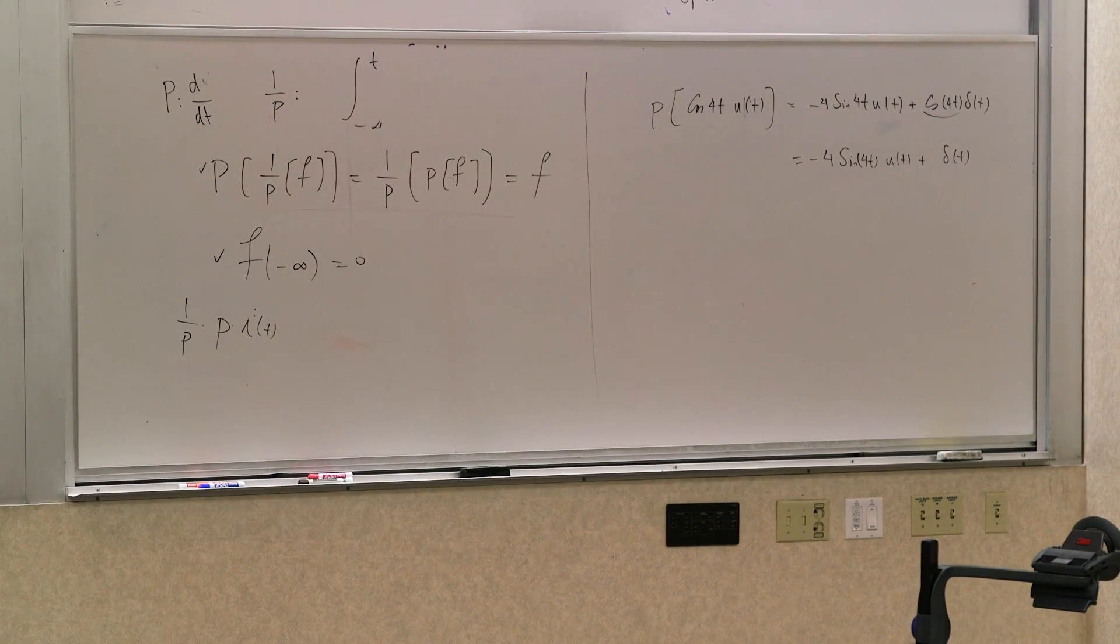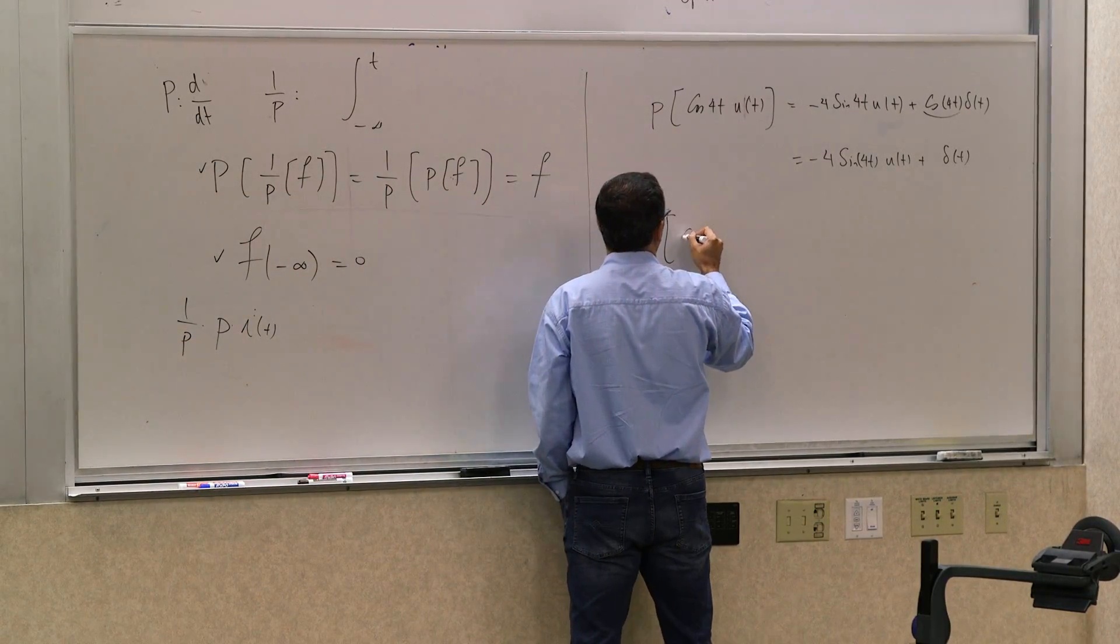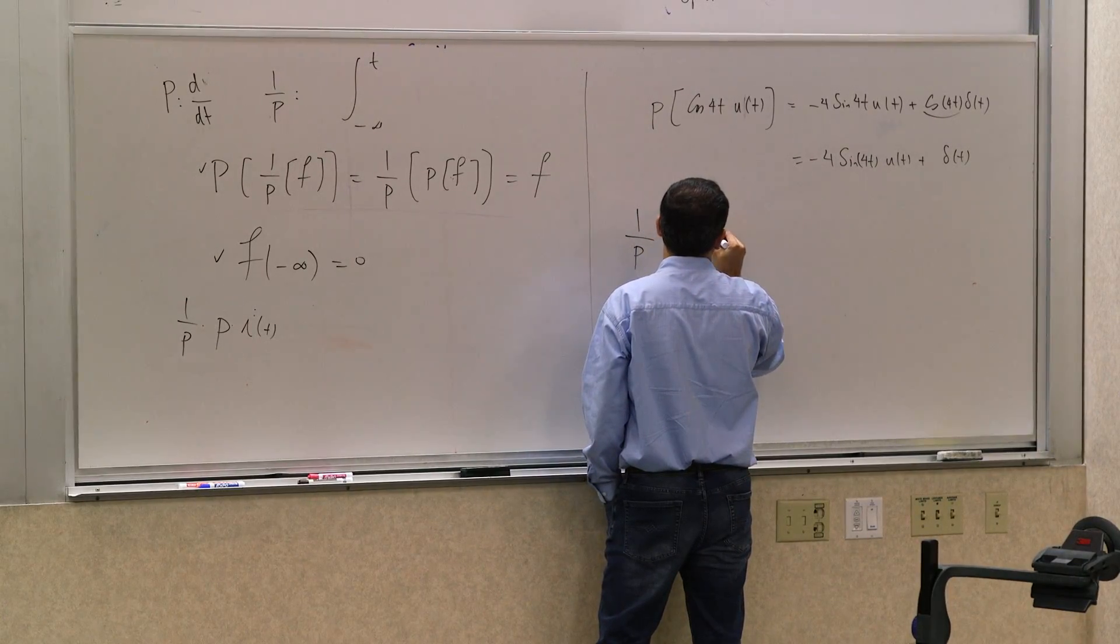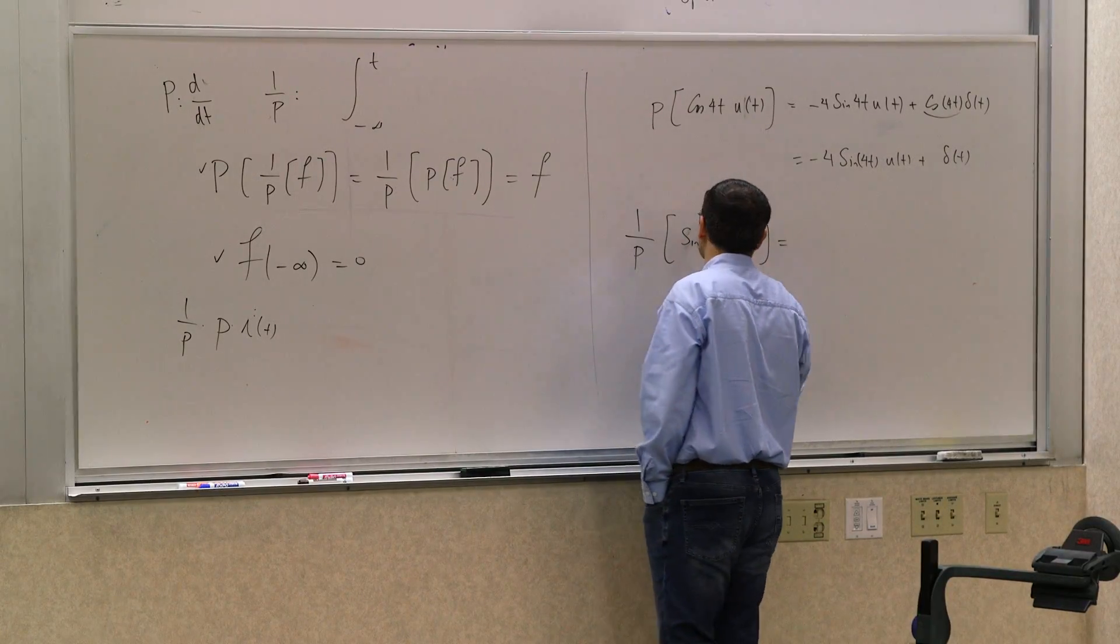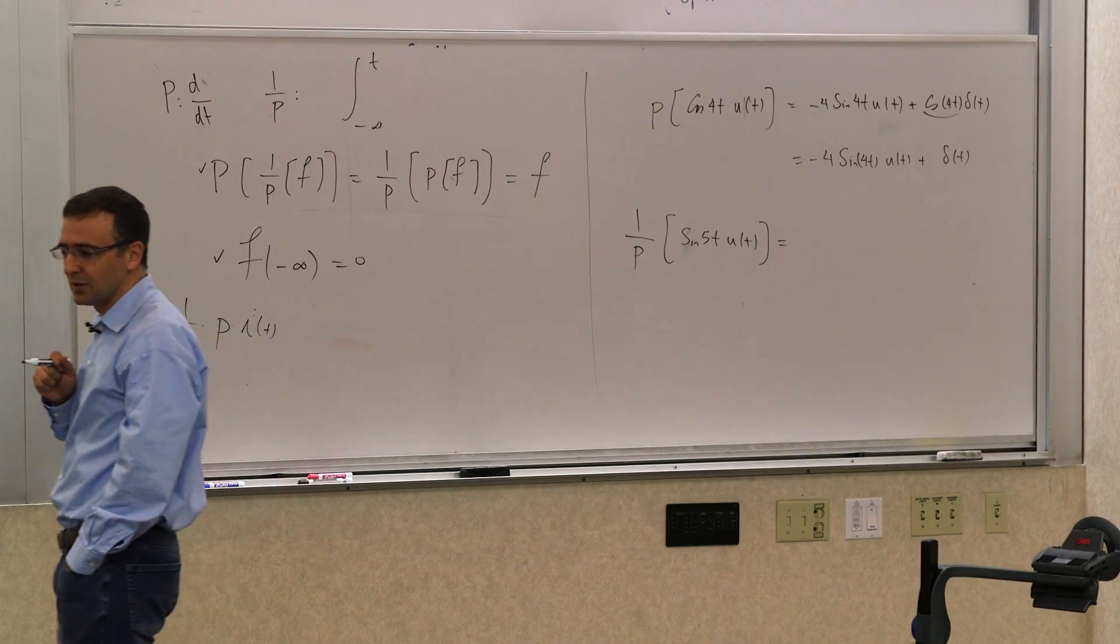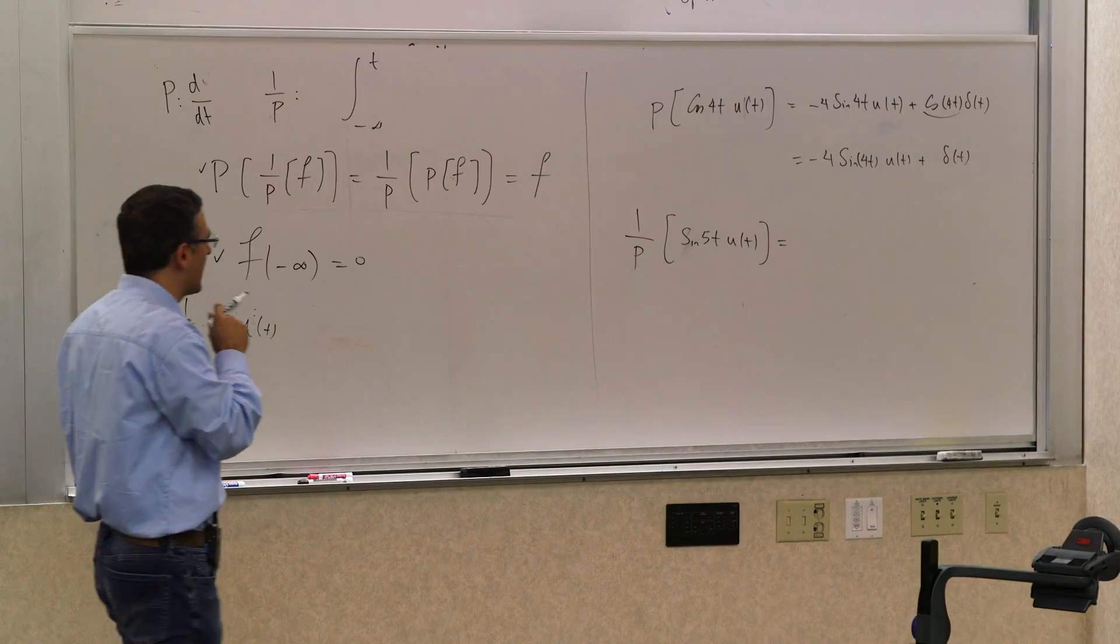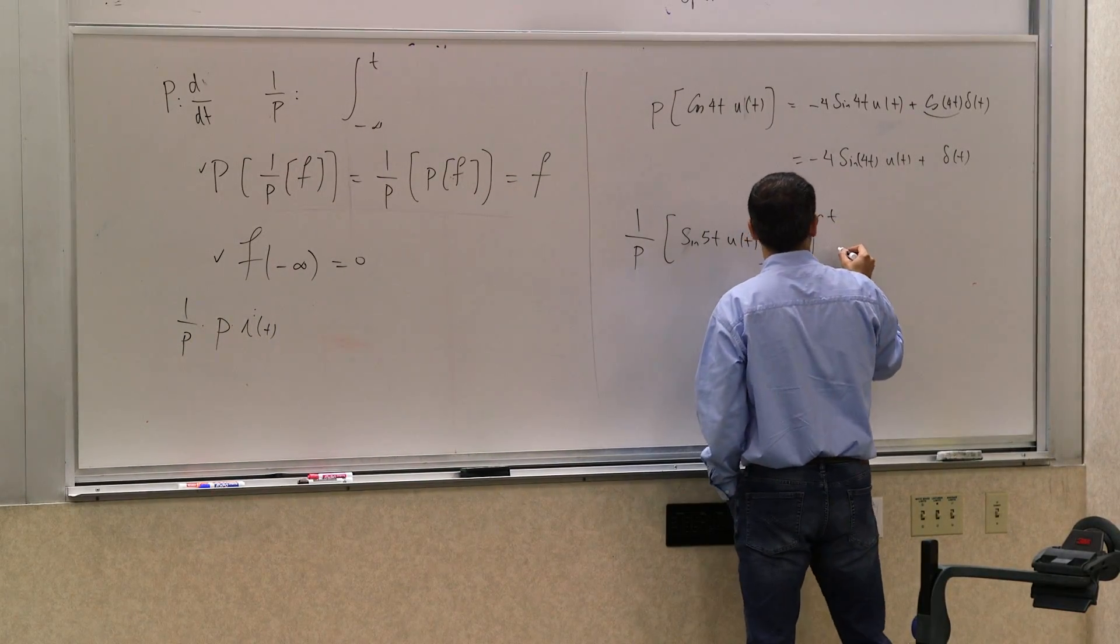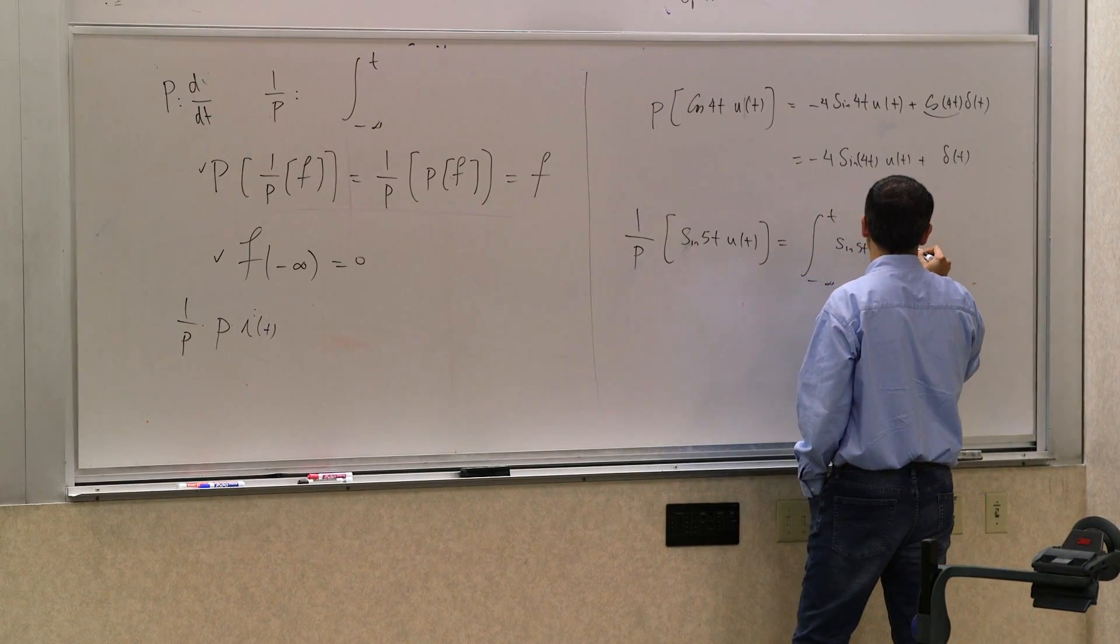Now let's say one last example. 1 over p of sine of 5t u(t). What is that? How do we calculate this? Think about it. It's really, what it is, it's the integral from negative infinity to t of sine of 5t u(t) dt.